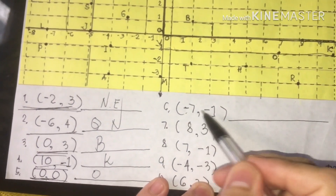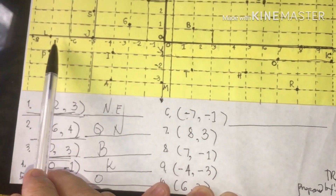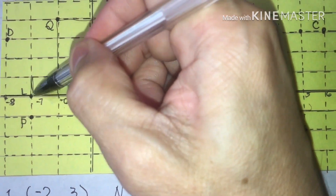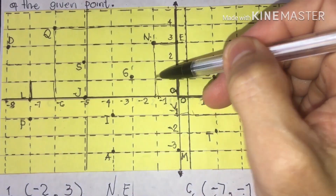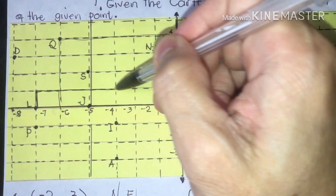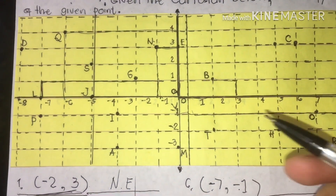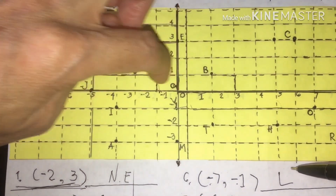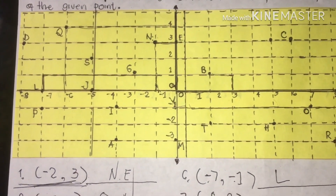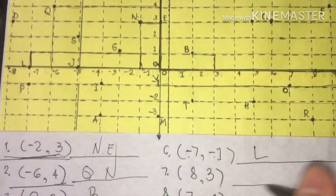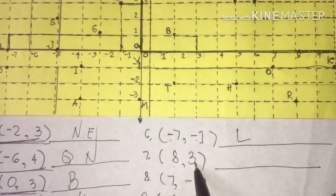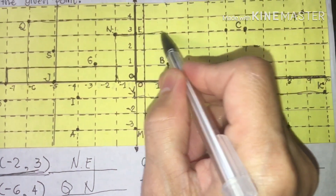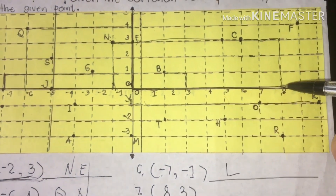Next, negative seven and negative one. We're going to find negative seven, then negative one. We have negative seven — that's letter L — then going down to negative one. That point is letter L. Next, positive eight and positive three: we have positive three going to positive eight — that point is labeled C.